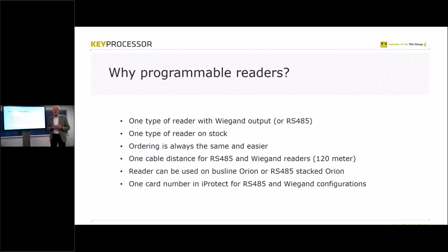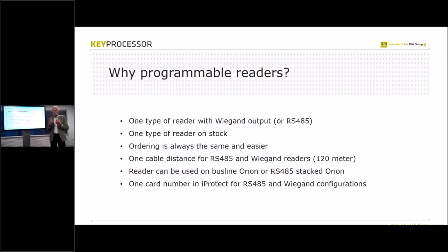You order the readers, and with the configuration card — you'll learn what that is shortly — you can start using the readers. Another benefit is cable distance: RS485 and Wiegand have the same cable distance of up to 120 meters between the Orion and the reader. Standard clock-data as Key Processor normally uses is 50 meters. On a cable bus line using Wiegand or RS485, it's always 120 meters, which is much easier for calculating the system. And it can be used on the bus line or stacked, as already mentioned.